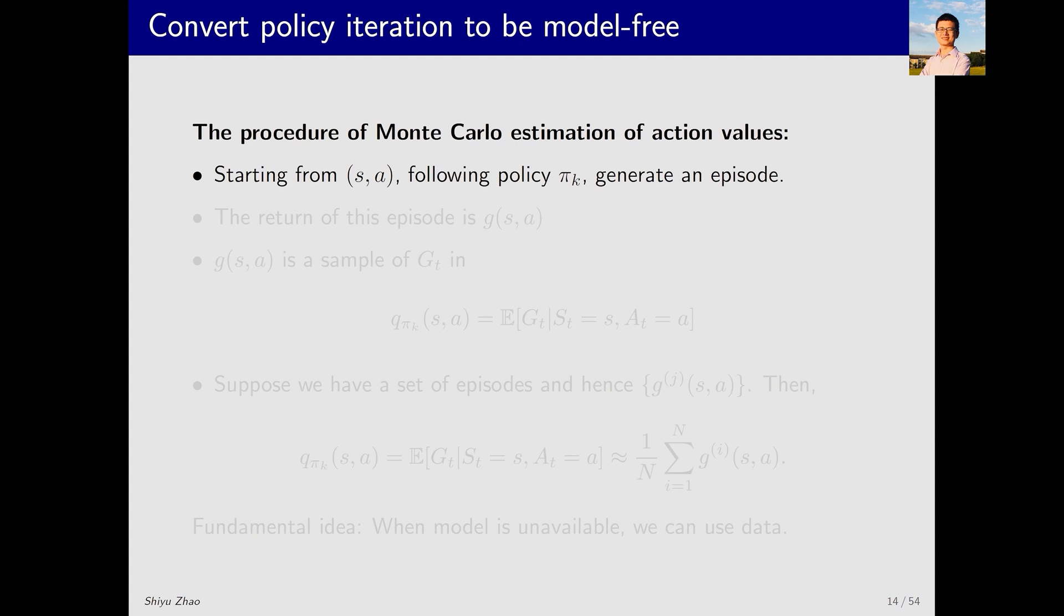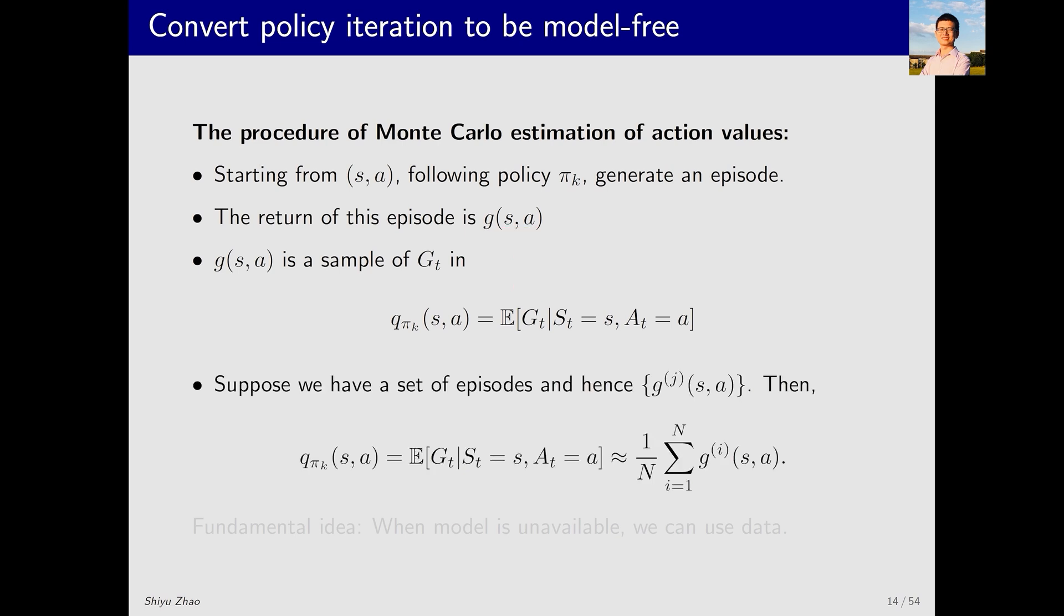Now, let's talk about how it's specifically done. First, we start from any combination of state s and action a. Following the current policy, we generate an episode and calculate the corresponding discounted return. We denote this as g(s,a). This is the definition of action value. g_t is the discounted return, which is a random variable, and g(s,a) is a sample of this random variable. Suppose we have a set of episodes, we can compute the average of the returns to estimate the expectation of g_t. This is Monte Carlo estimation, as we discussed in the motivating example.